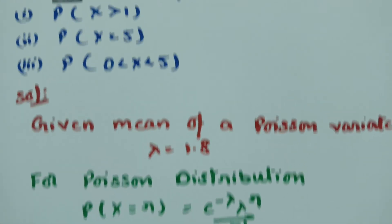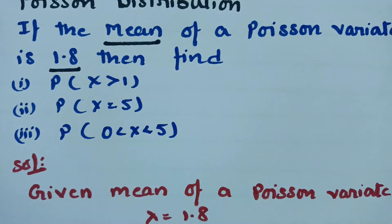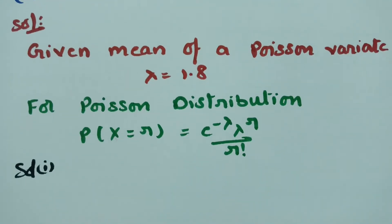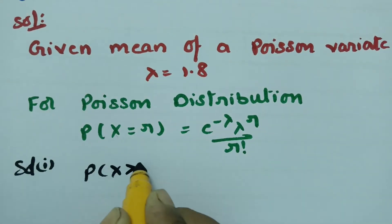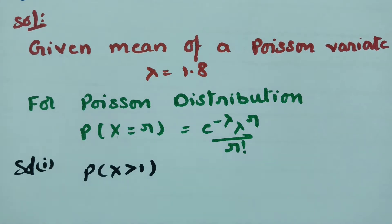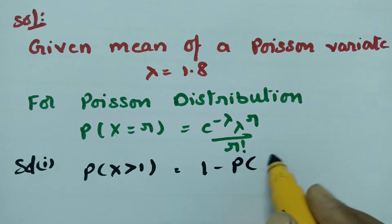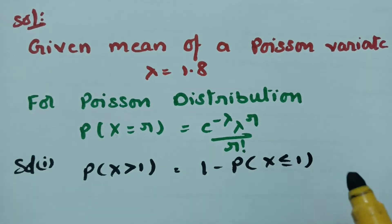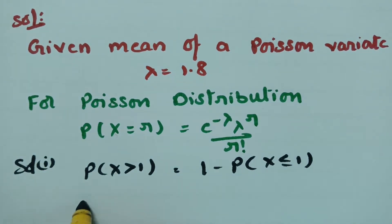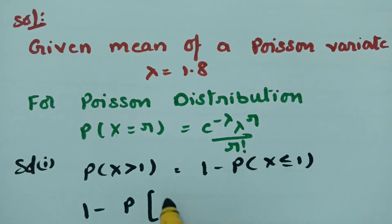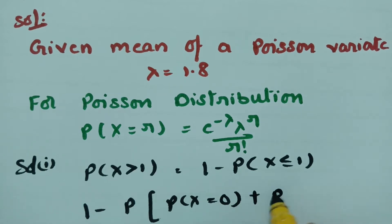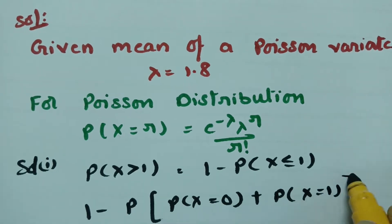For solution 1, we have to find P(x > 1). Since x greater than 1 means values 2, 3, 4, and so on, instead of summing those, we use the complement: 1 minus P(x ≤ 1), which equals 1 minus [P(x = 0) + P(x = 1)].